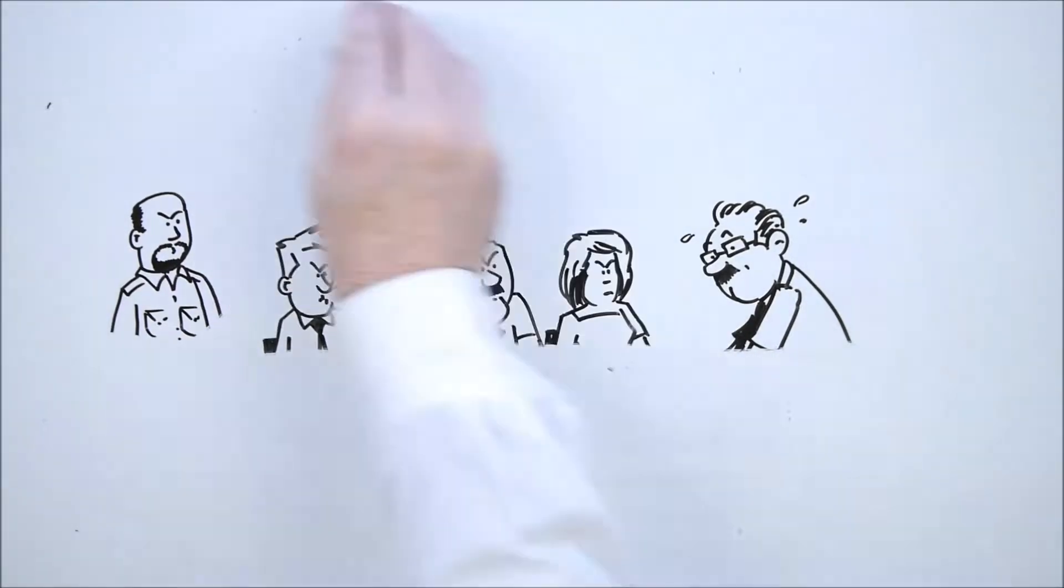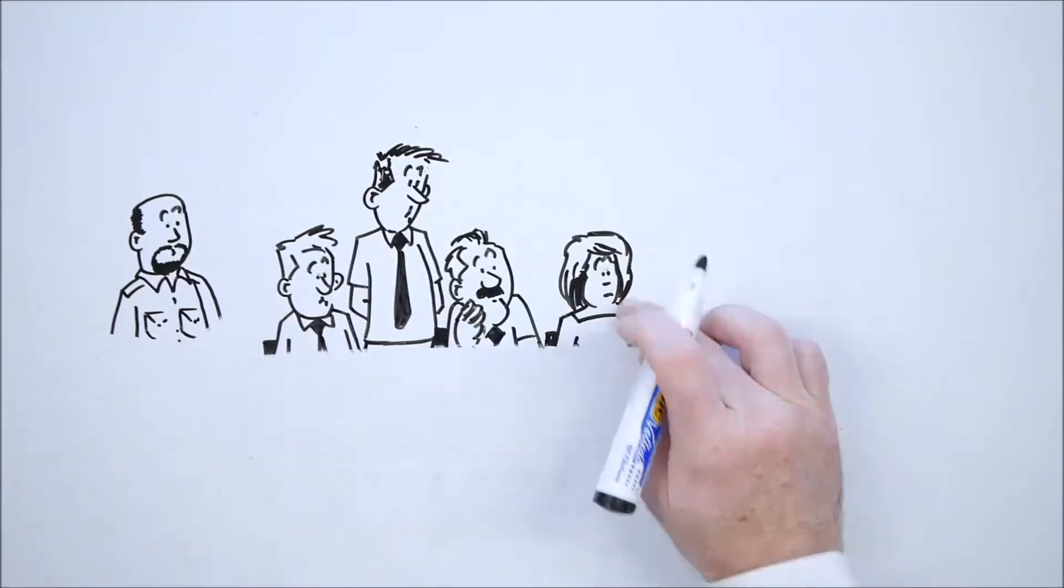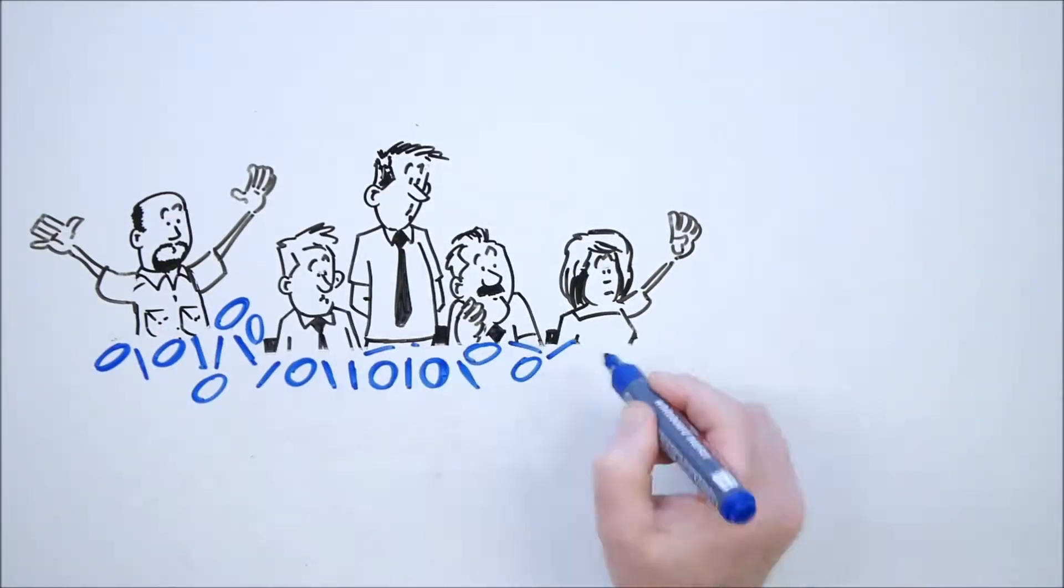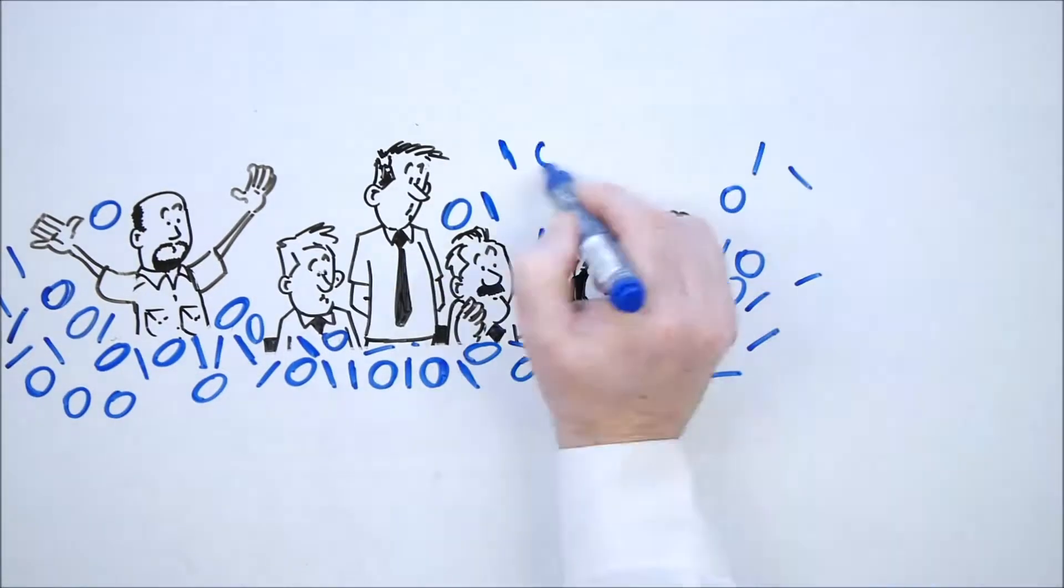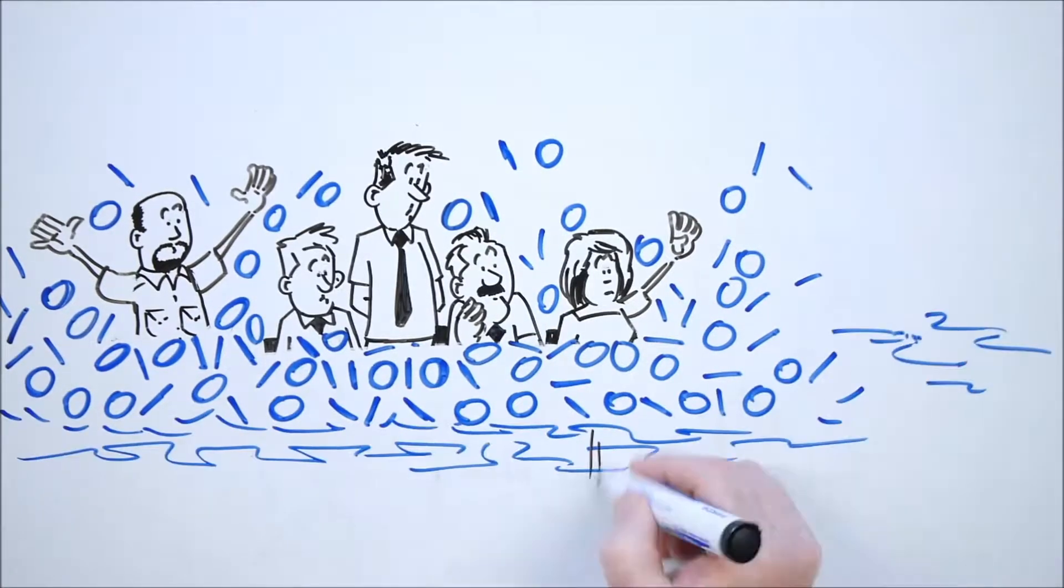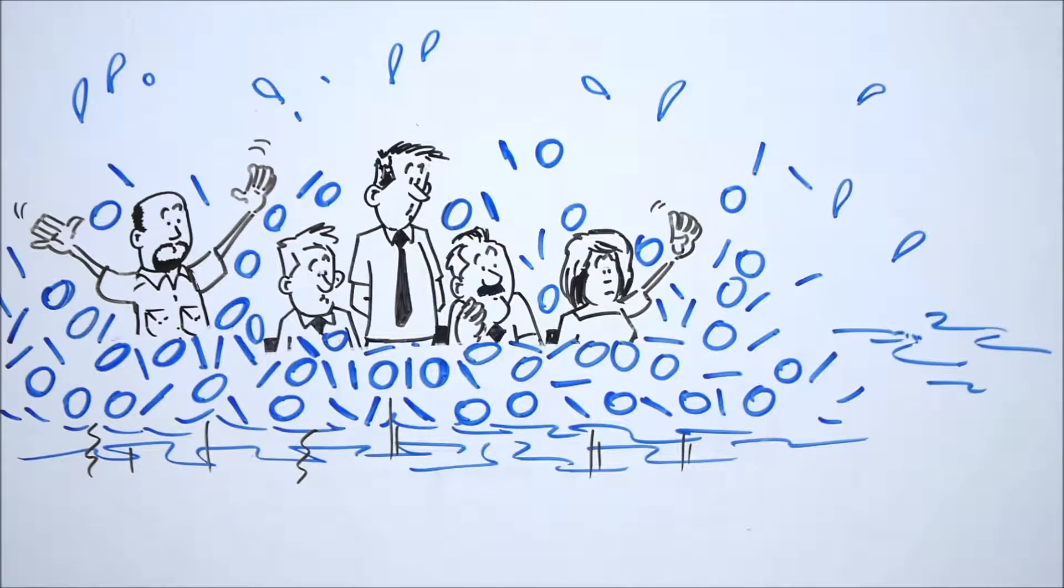They all complained that using span ports was causing access issues as there were simply not enough available ports, and even if they could access the traffic, their network tools were getting overloaded. They were drowning in data.